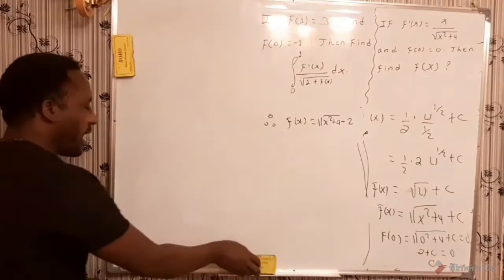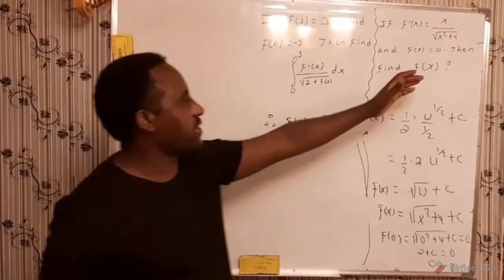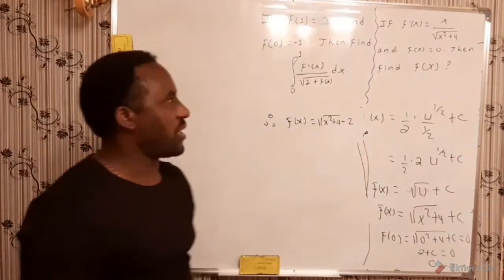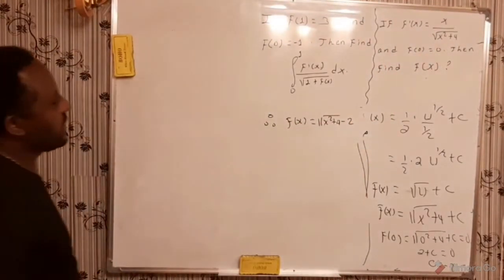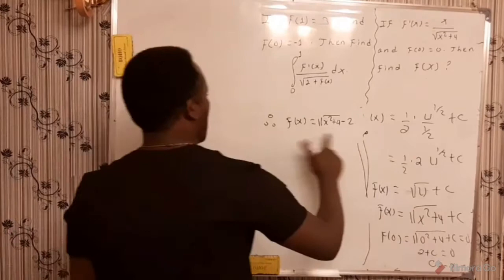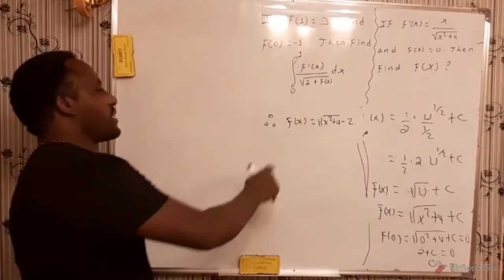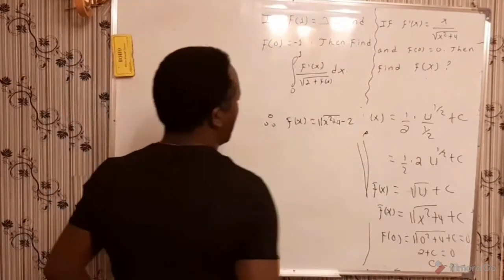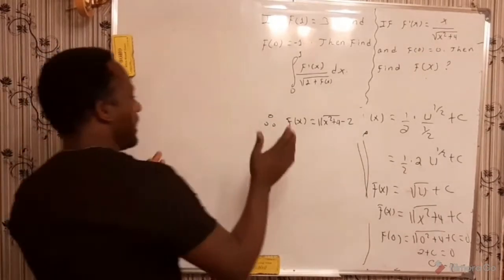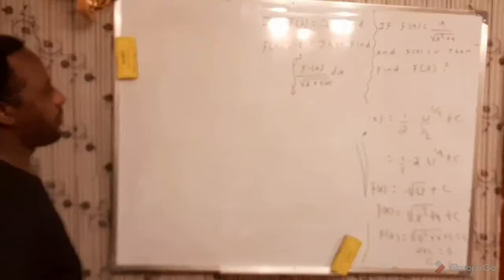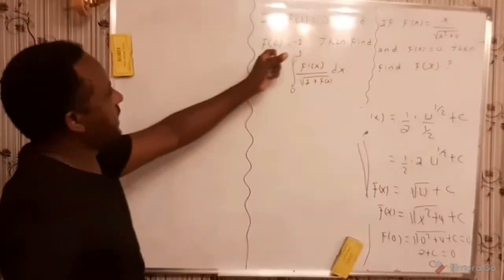So you can see how we find an arbitrary function f of x when the derivative of the function is given and one particular range value for the function is given. This is immediately determined by the concept of integration. If you find the derivative of this result you will have f prime of x, and the integral of f prime of x gives f of x. This is how we relate integration and differentiation on this particular example.